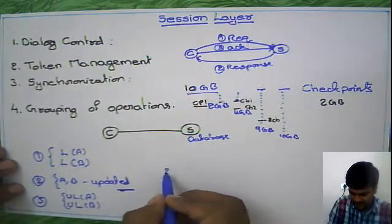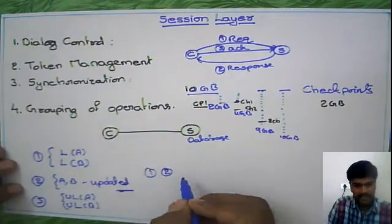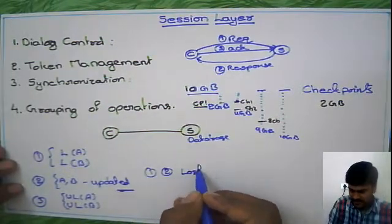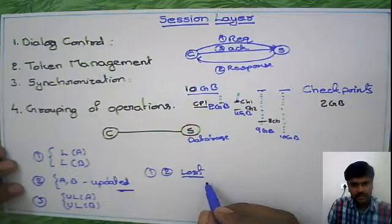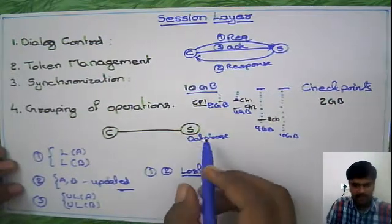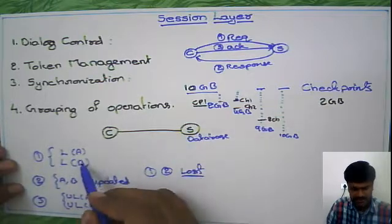After sending first and second packets, connection is lost. So in this situation, lock is remained on this data fields A and B.